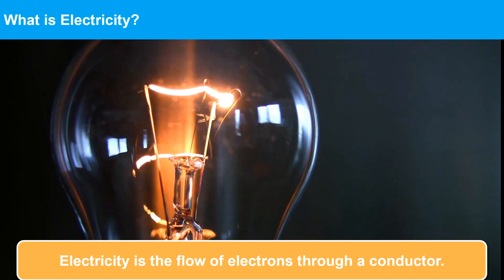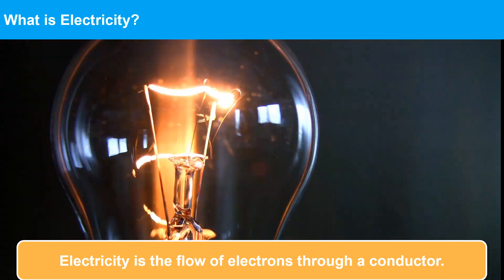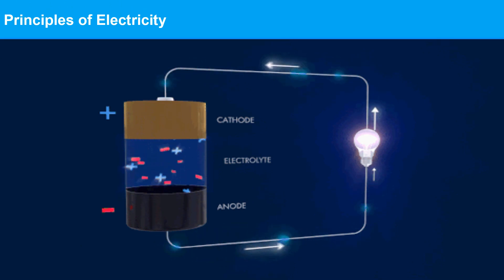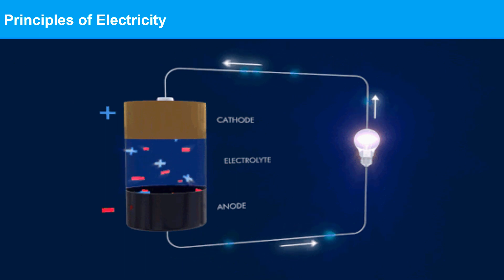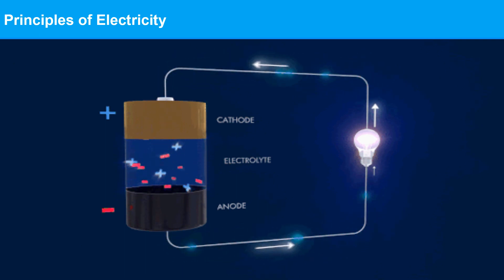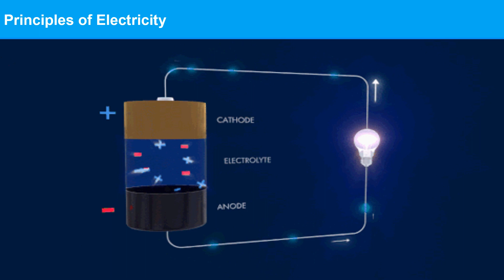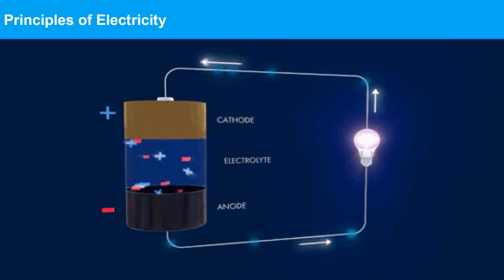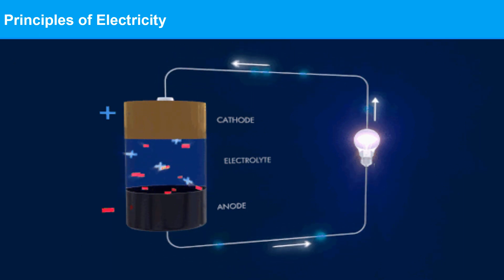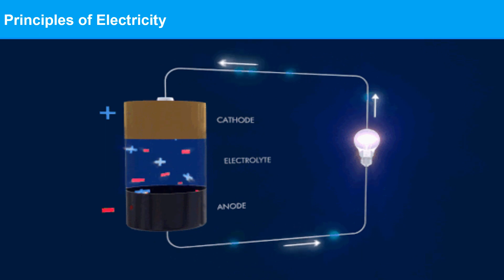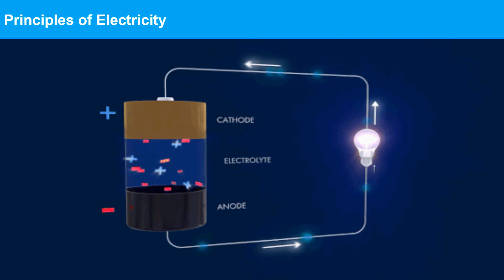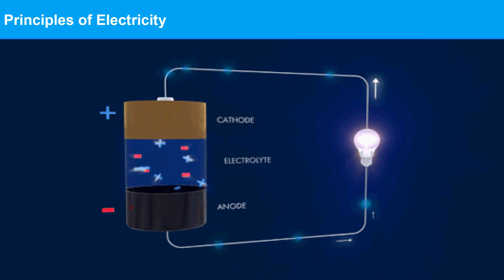What is electricity? Electricity is the flow of electrons through a conductor. A circuit is formed by connecting a battery and a light bulb together. Electricity flows in one direction, from the battery to the bulb, causing the filament in the bulb to heat up and emit light. If the circuit is broken by disconnecting the wire, the flow stops and the bulb goes out.